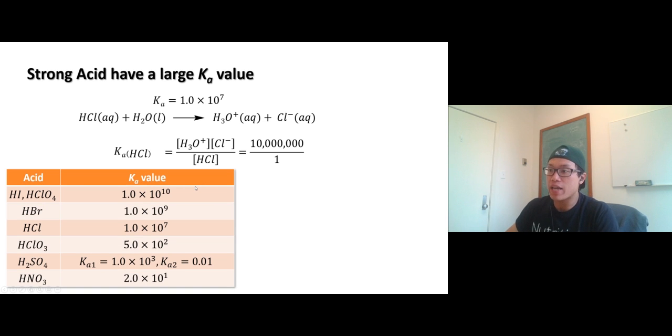These are the list of the Ka values of strong acids. So hydroiodic acid and perchloric acid are really at the top, 10 to the 10th. Hydrochloric acid, 10 to the seventh. So sulfuric acid and nitric acid, 10 to the third, and nitric acid, just about 20, so 10 to the first.